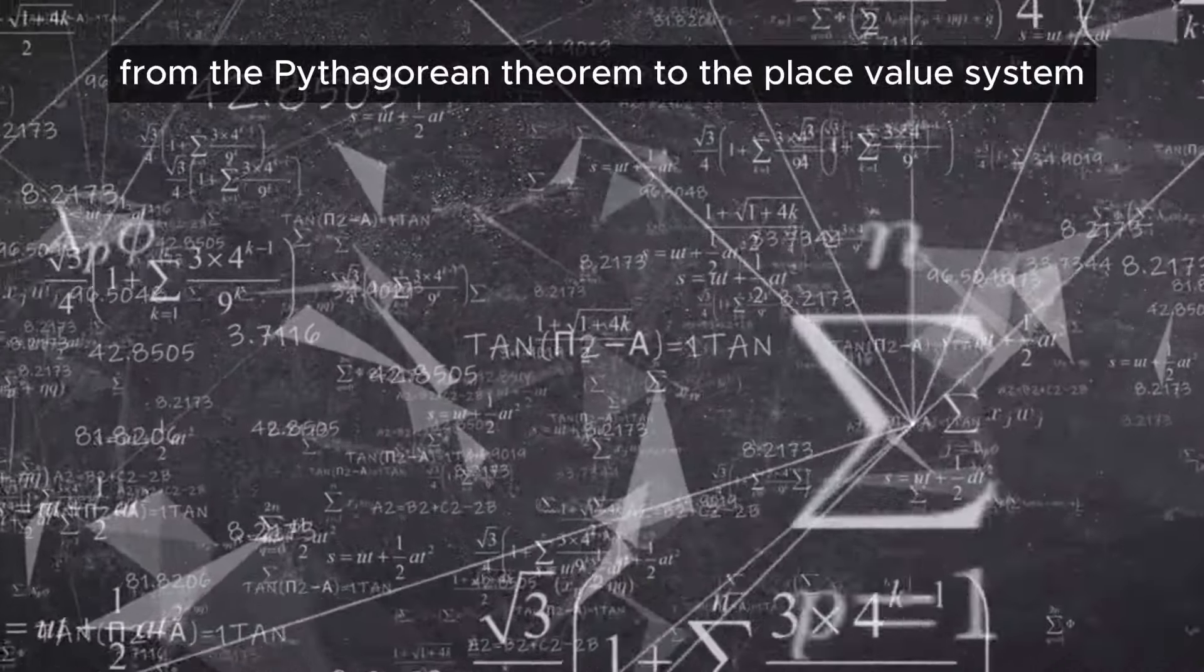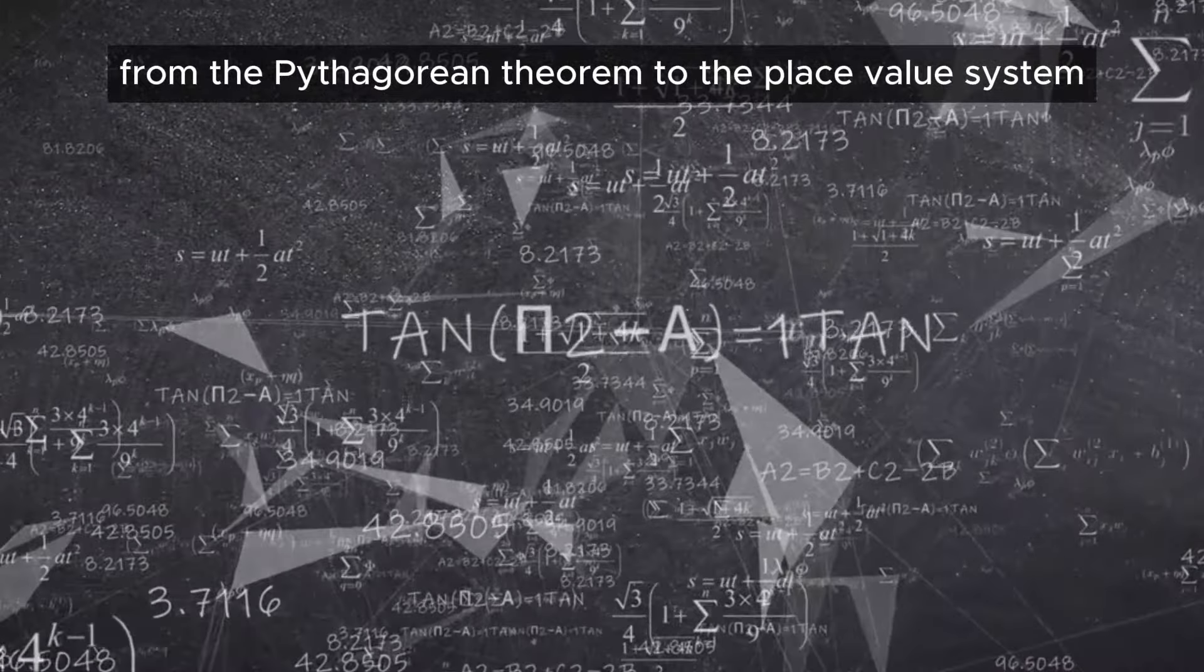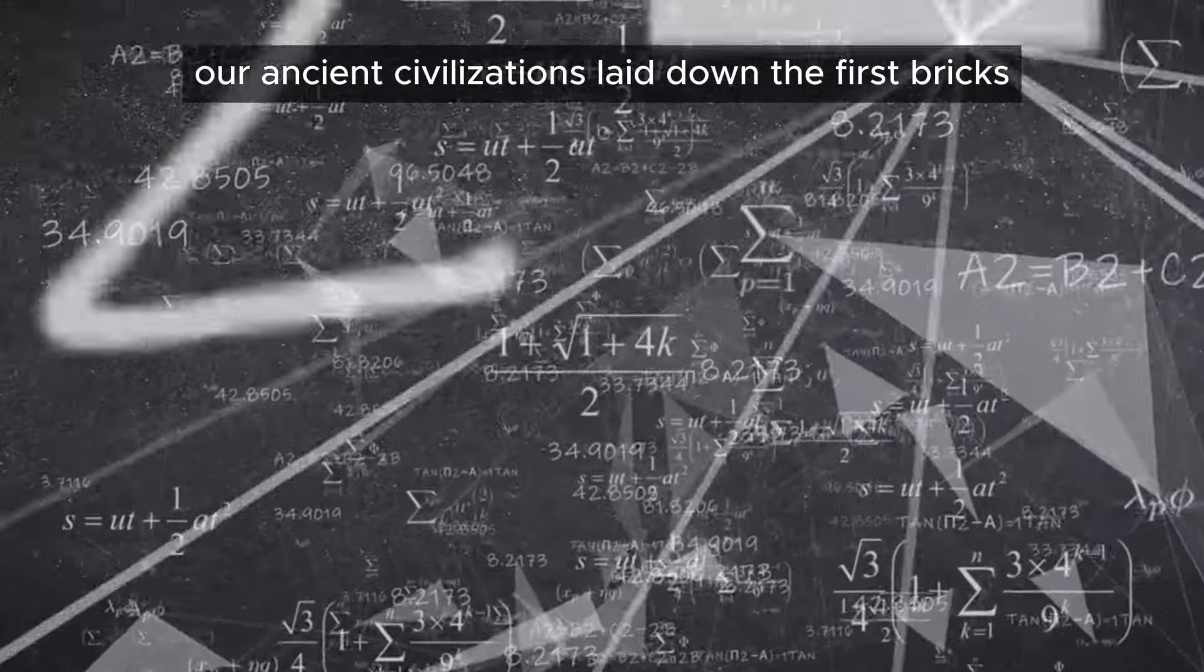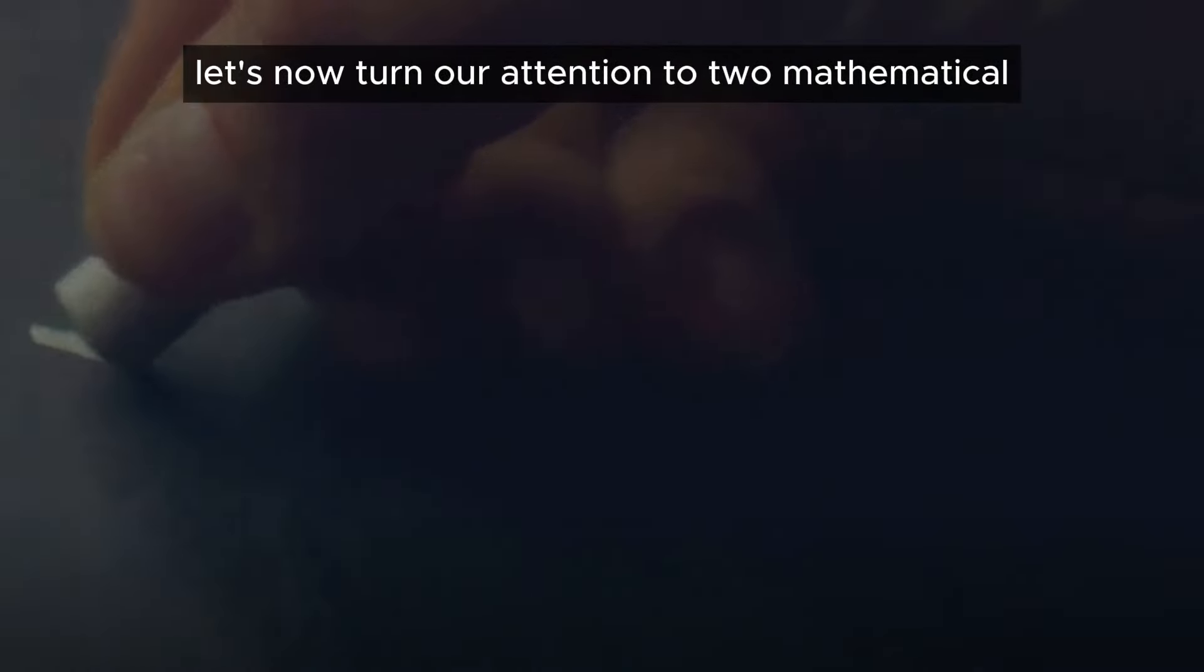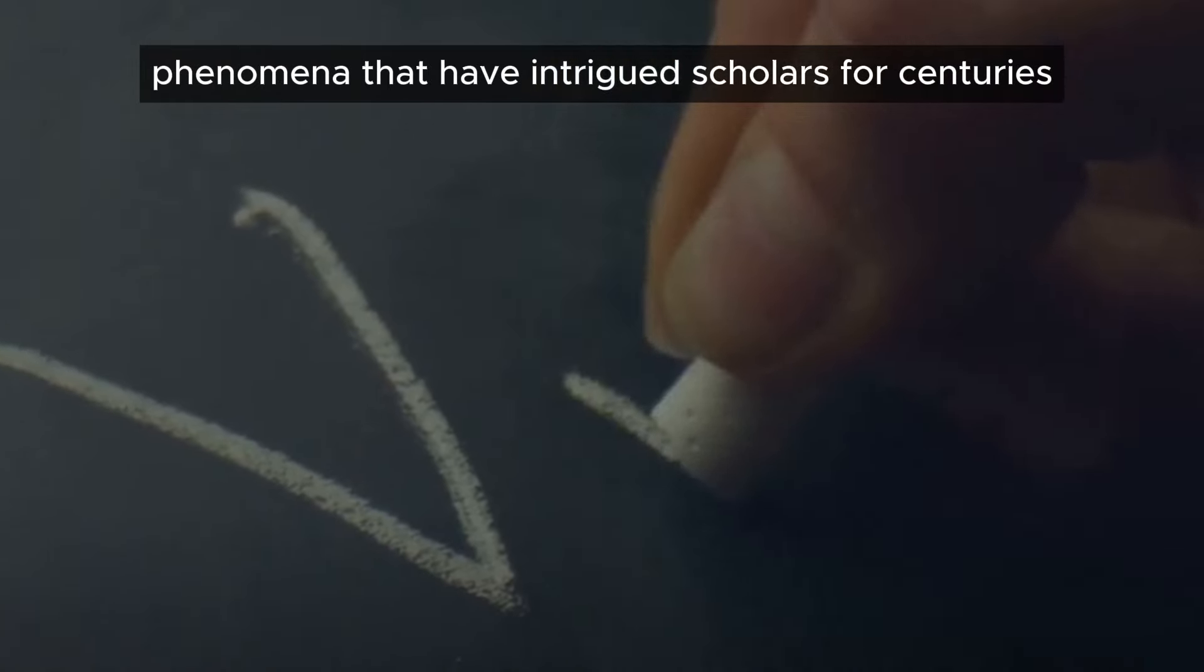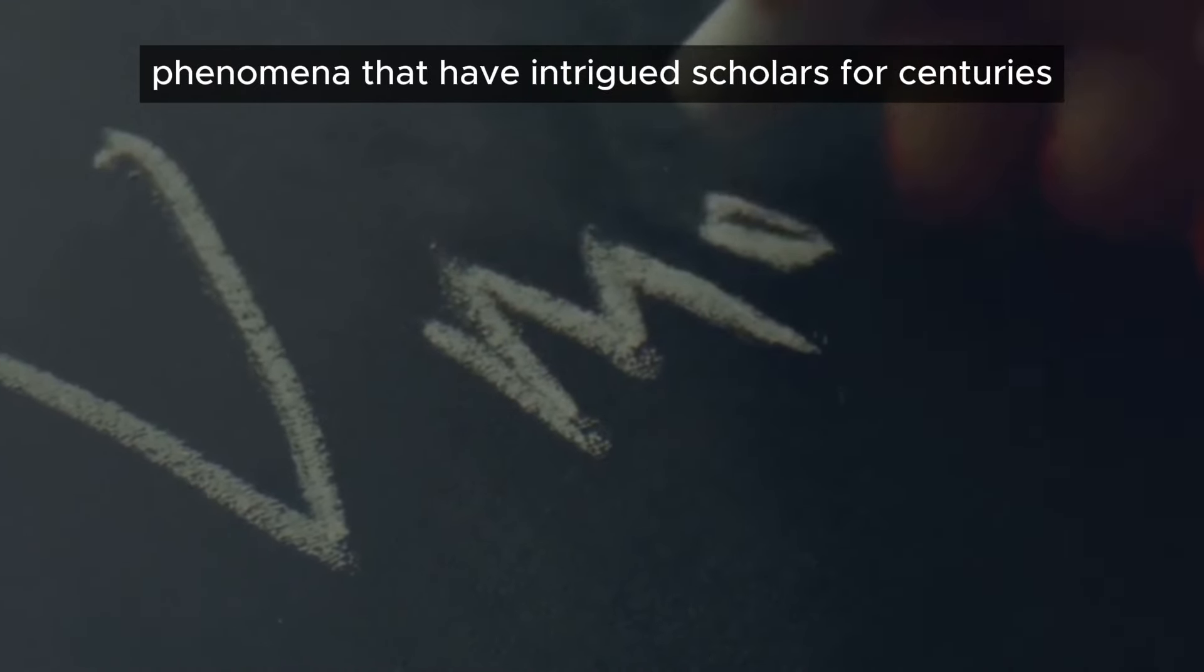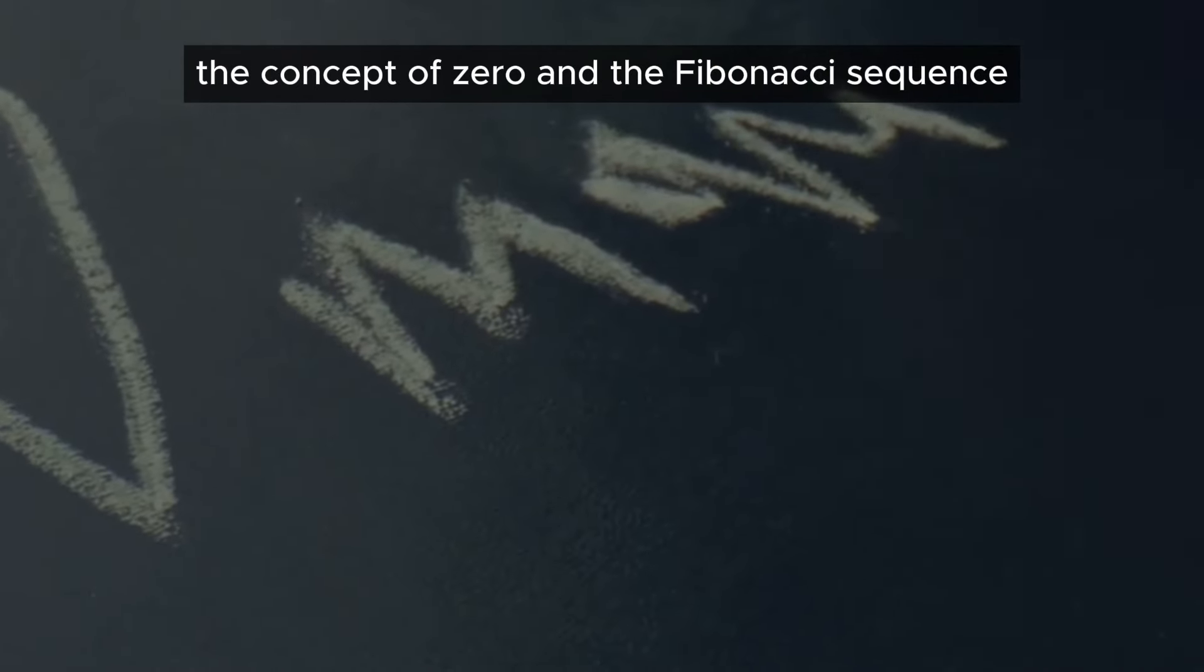From the Pythagorean theorem to the place value system, our ancient civilizations laid down the first bricks on the road of mathematical journey. Let's now turn our attention to two mathematical phenomena that have intrigued scholars for centuries, the concept of zero and the Fibonacci sequence.